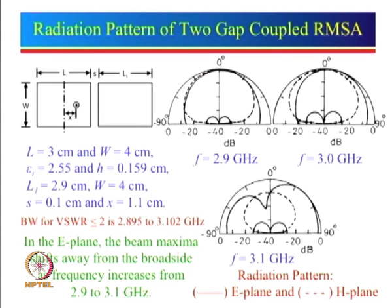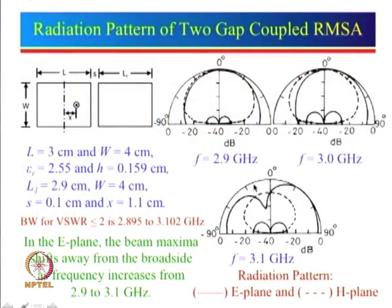We saw that we can get a very good bandwidth, but defining bandwidth just from VSWR is not a good idea. We should also see what is the radiation pattern, whether it is stable over the bandwidth, and whether gain is stable over the VSWR less than 2 bandwidth. The study is incomplete if we do not look at the radiation pattern and gain performance. Let us see the radiation pattern.